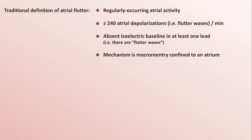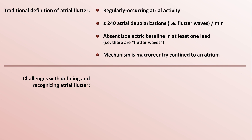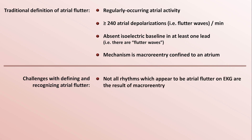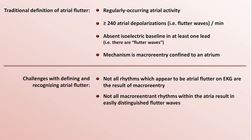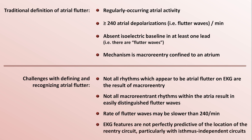I'd like to return to the traditional definition of atrial flutter with which I opened the video. First, not all rhythms which appear to be atrial flutter on EKG are the result of macro reentry, and not all macro reentrant rhythms within the atria result in easily distinguished flutter waves — meaning there's not always a clear division between atrial flutter and atrial tachycardia. The rate of flutter waves may also be slower than 240 per minute, most commonly due to the use of class 1C antiarrhythmics. Additionally, the electrocardiographic features are not perfectly predictive of the location of the reentry circuit, particularly when those circuits are isthmus-independent.